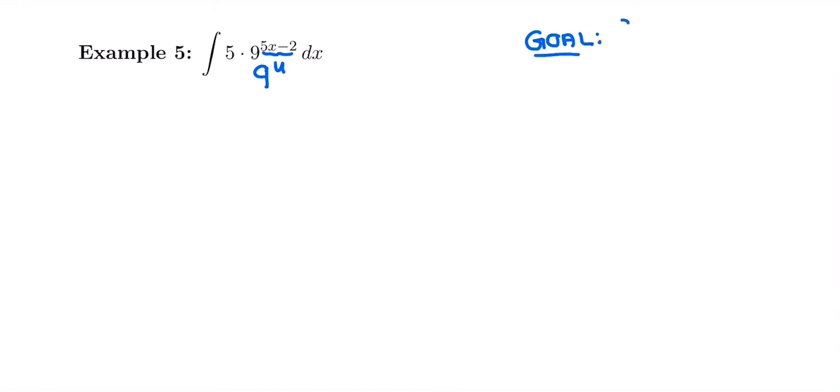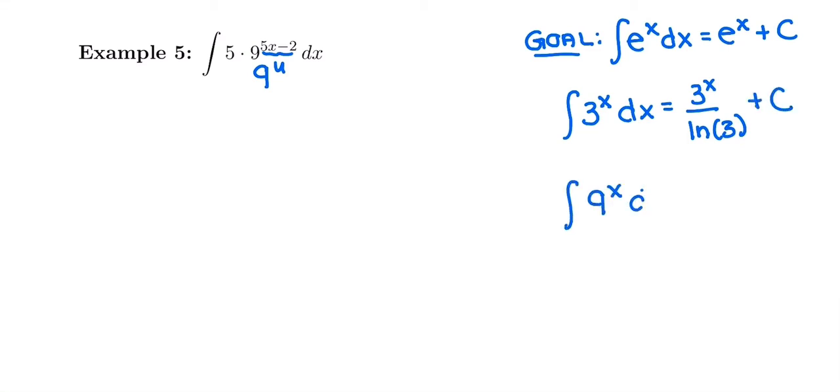So with exponentials, we want to make it look like e to the x because we know how to take that antiderivative. The antiderivative of e to the x was e to the x plus c. And then our other exponentials, when it had any different base, so this one's base 9, we could review with a different base if we need to. Antiderivative of 3 to the x was 3 to the x over ln of 3 plus c. And this one, it's kind of like 9 to the x, except for it's more than just an x up there. So our antiderivative is going to be 9 to the x over ln of 9 plus c.